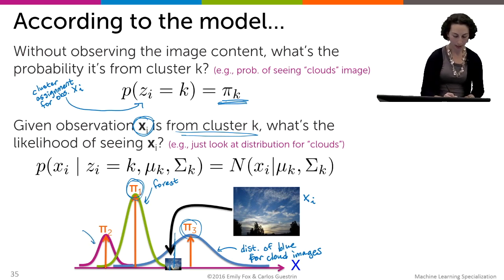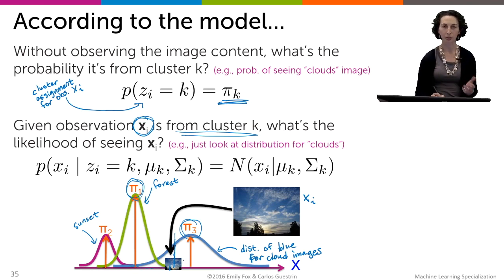Under the sunset category, it's extremely unlikely. There's basically zero probability of observing this blue intensity value under that category, so I can rule it out regardless of what the weight is on that category. But for these other clusters, there's going to be some competition between how much I'm likely to just see images of that type versus how likely it is under that category. We're going to use both of these things to represent our uncertainty about the cluster assignment.